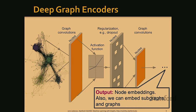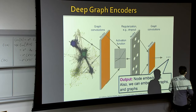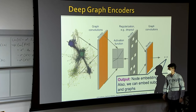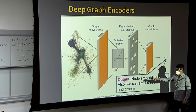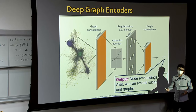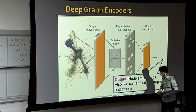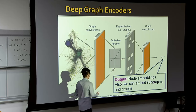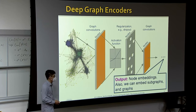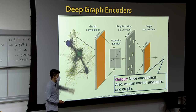Here is our pipeline for the deep graph encoder. Our input is a complex network, which we pass through several graph convolutional layers, potentially with activation functions and regularization layers in between. After computing through this deep encoder, we get an output — most commonly node embeddings, but we can also generate subgraph embeddings or even embeddings for entire graphs.